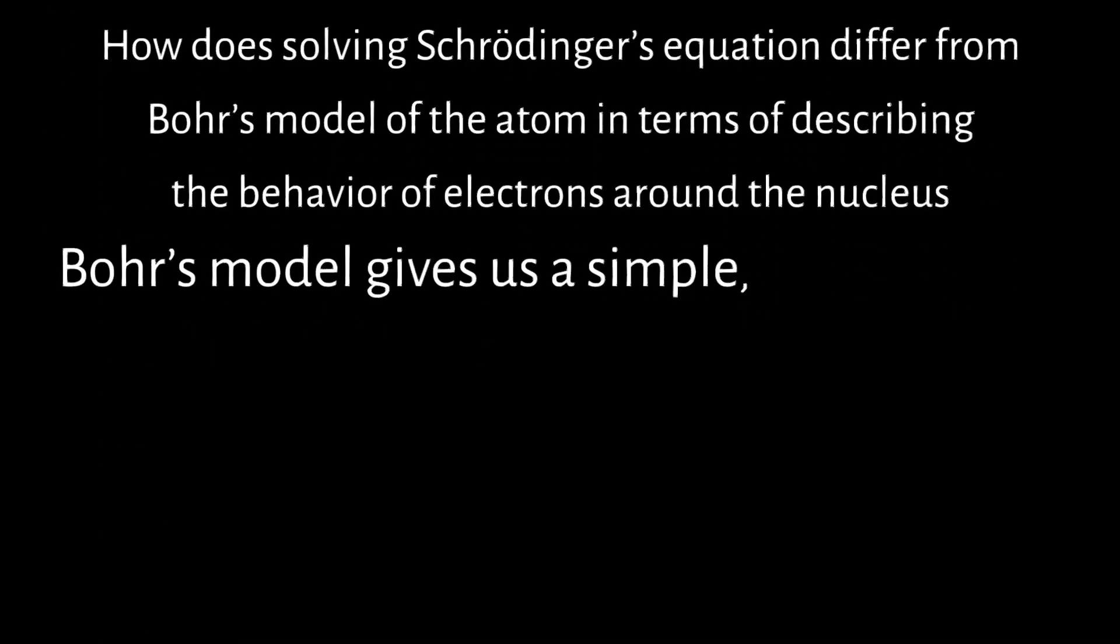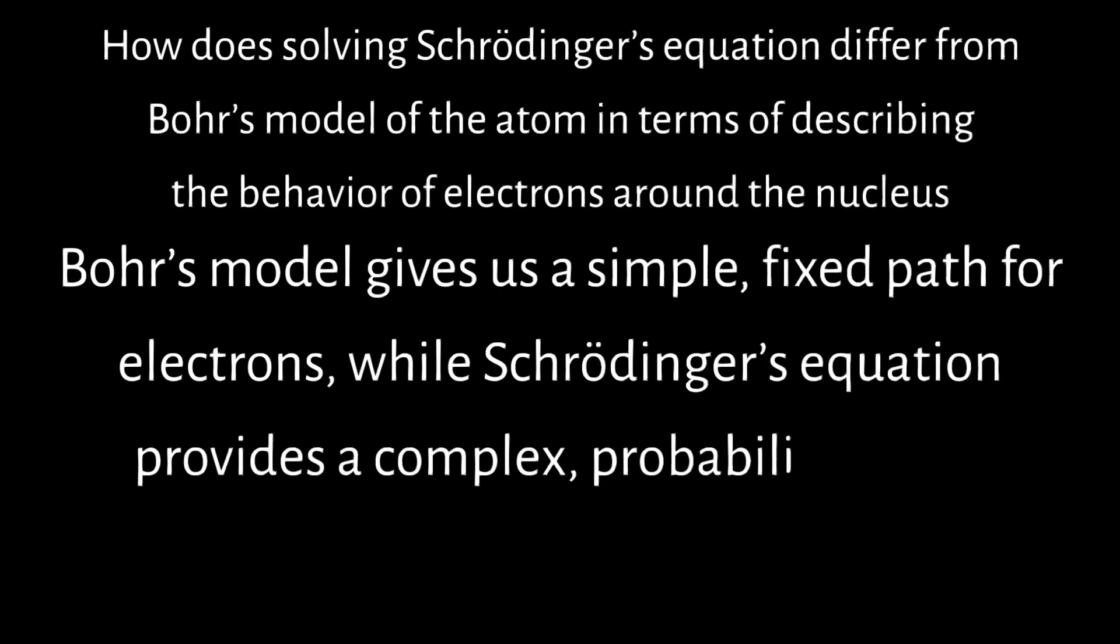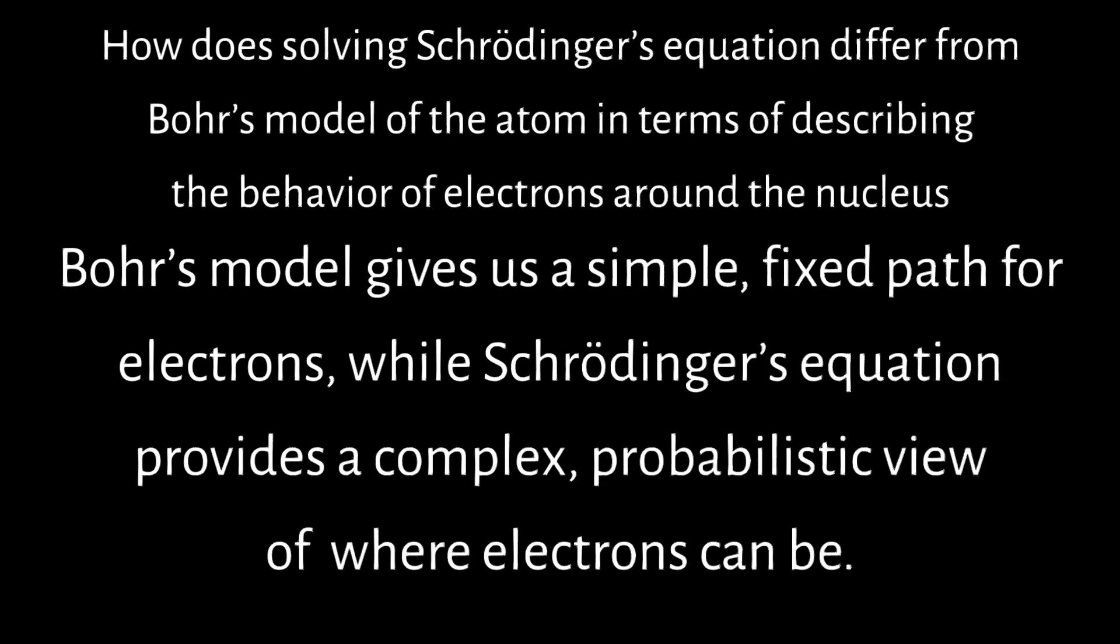Bohr's model gives us a simple fixed path for electrons, while Schrödinger's equation provides a complex probabilistic view of where electrons can be.